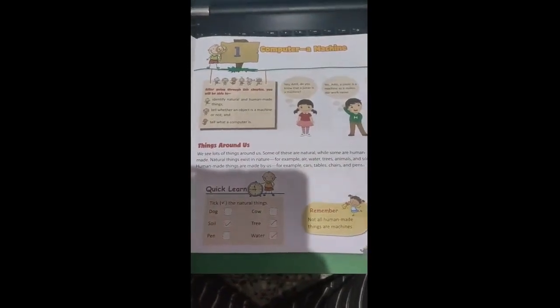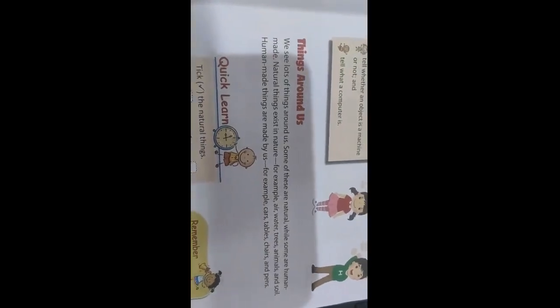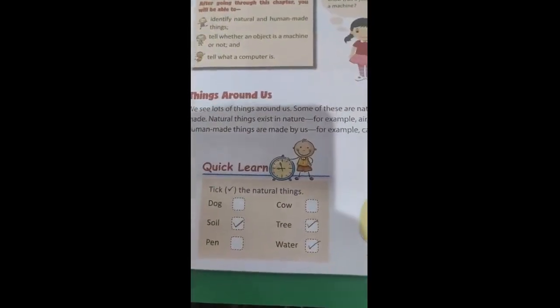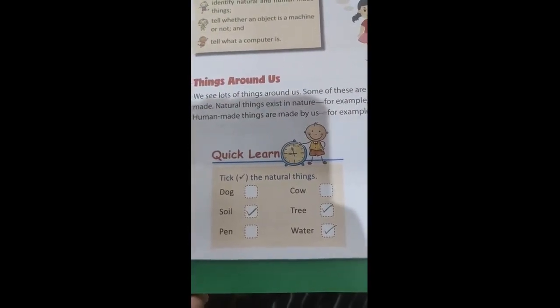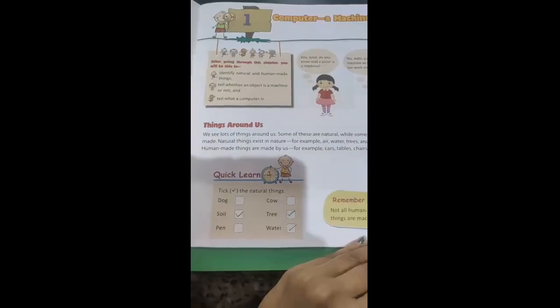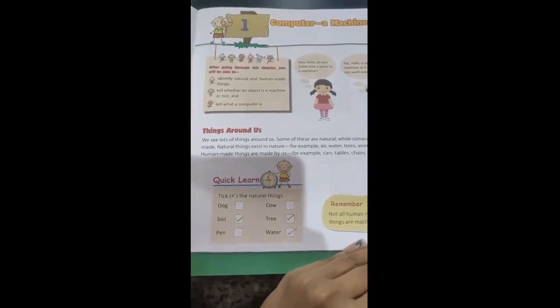We were learning about things around us — computer, a machine — and in that we were learning things around us. If you remember, I gave you a quick learn activity to identify natural things. Soil is a natural thing, tree is a natural thing, water is a natural thing. The things that are God-given to us are called natural things.